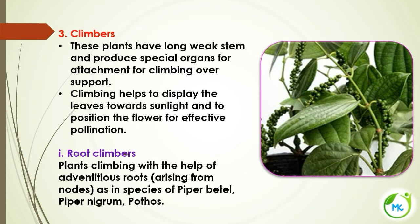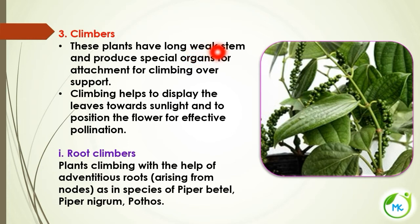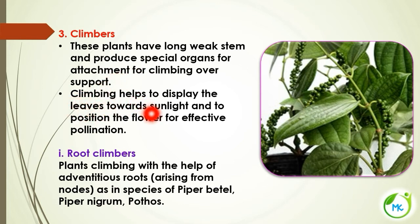The next aerial modification is climber. These are plants that have a long weak stem. Since the stem is weak, they need a specific attachment to a support, using special organs for climbing. Climbing helps to display the leaves towards sunlight and to position the flower for effective pollination.